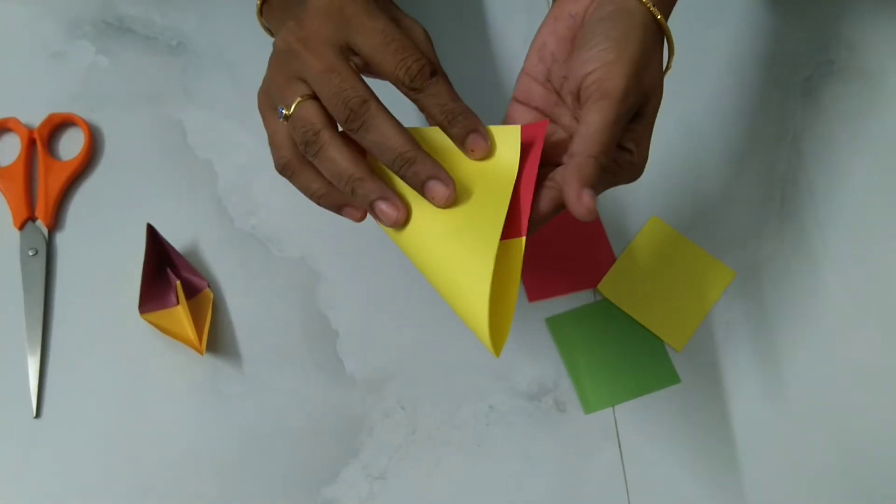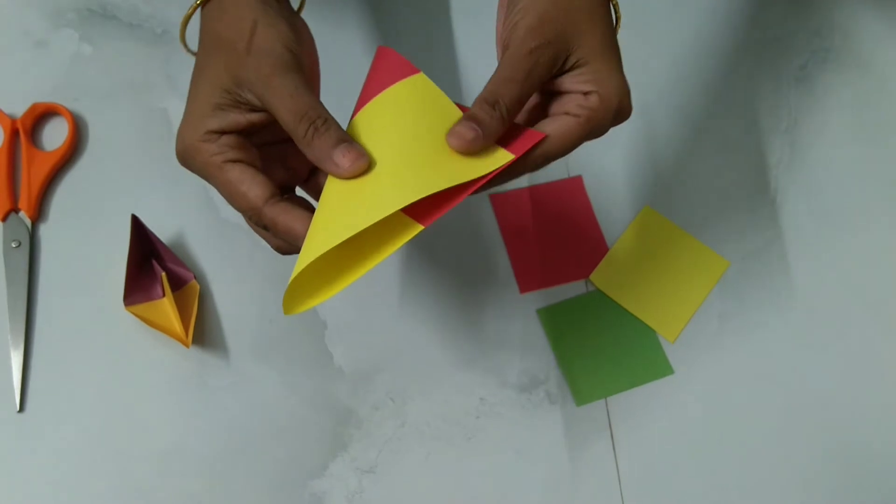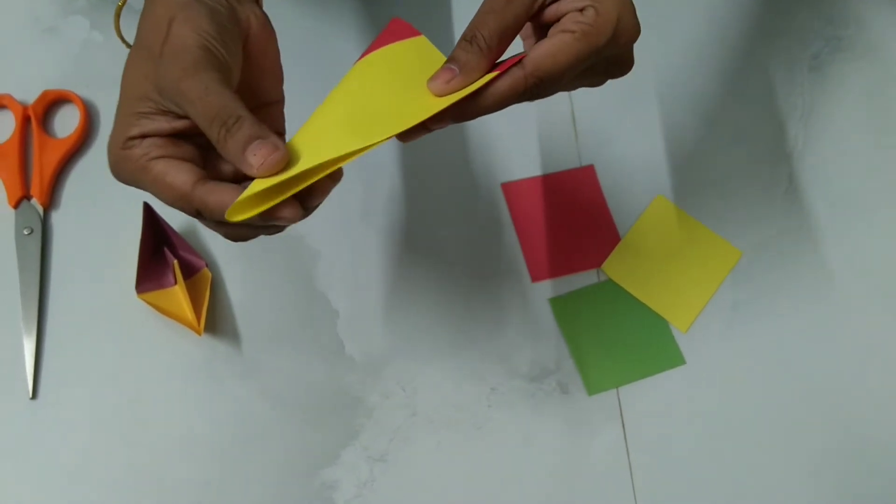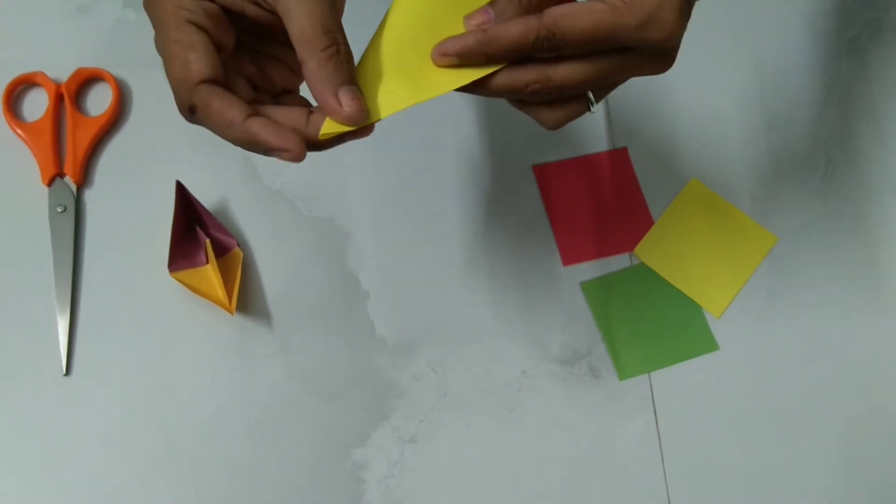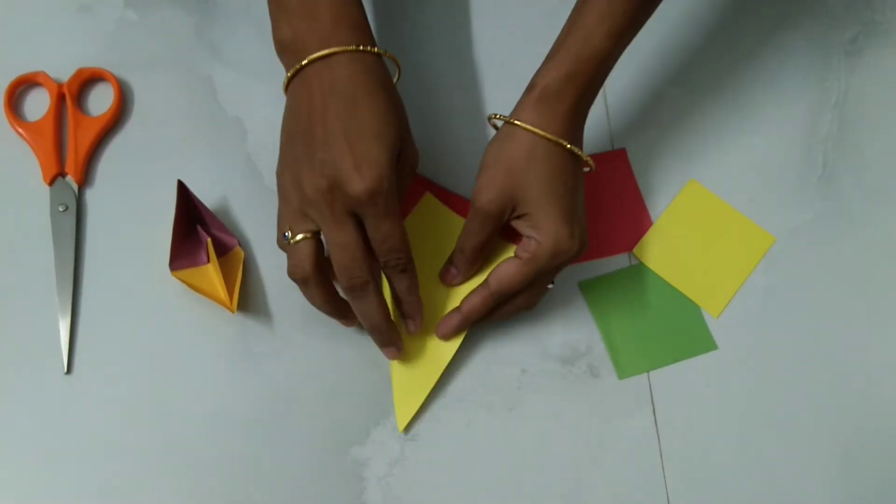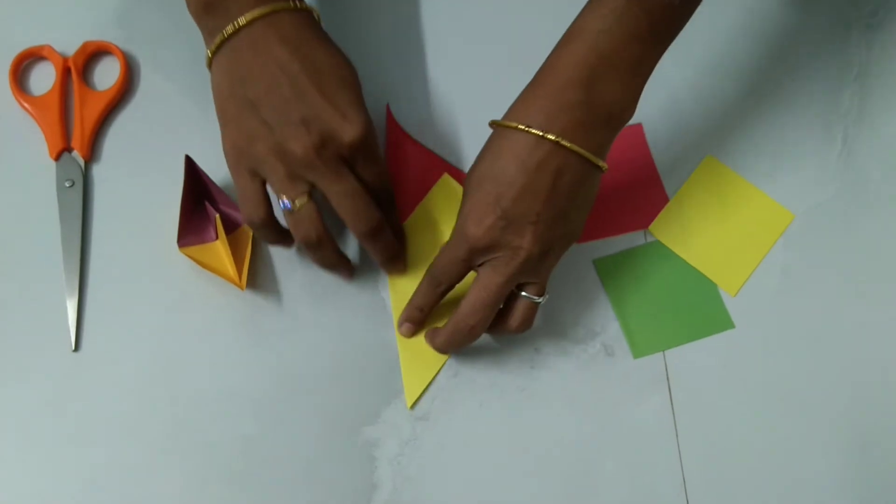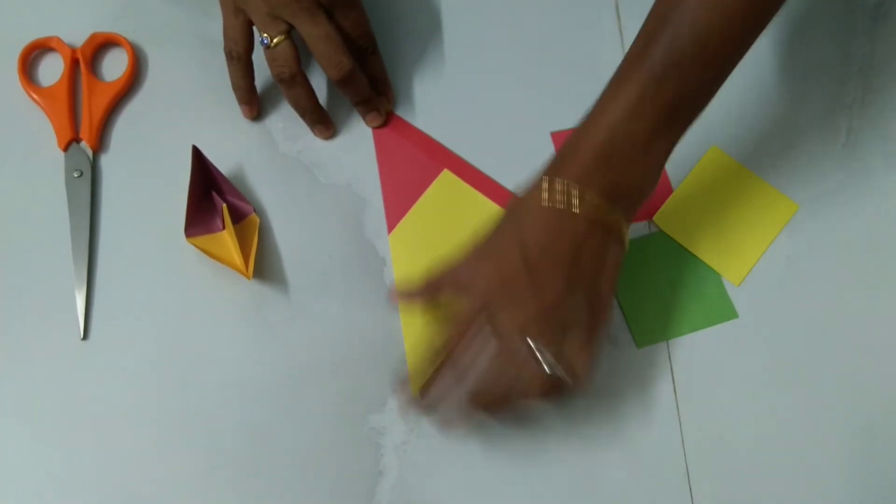As I am showing you in the activity, you fold your paper as I am folding here and join two different sides of this paper in a triangle shape.